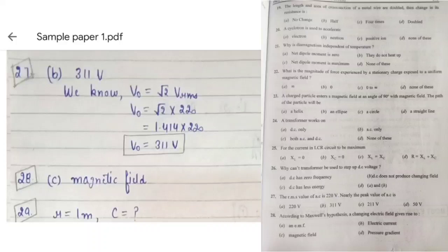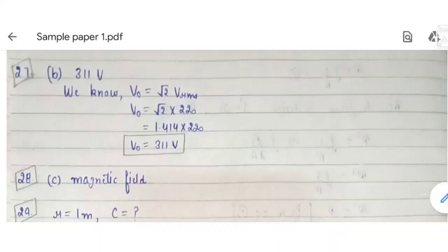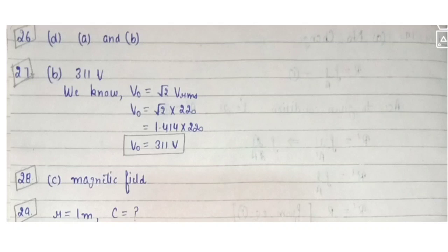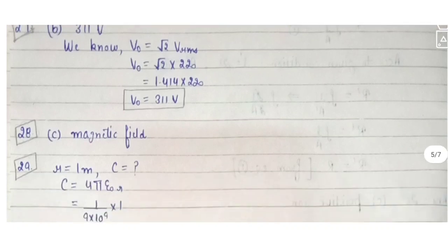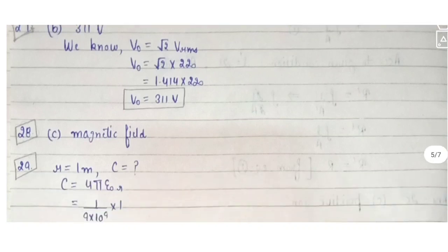Question 27: the RMS value of AC is 220V — what is the nearest peak value? The peak value is 311V. This is a standard value to learn. If you don't remember, you can calculate it, and the answer will be 311.